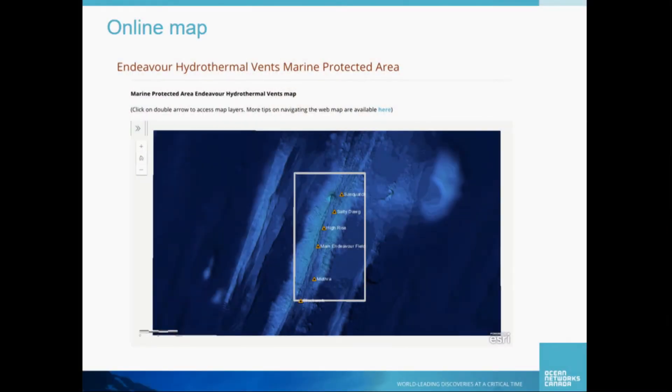We share it with Fisheries and Oceans Canada or whoever wants it, and all this data is free. You can Google 'Endeavour MPA Ocean Networks Canada' and this map will show up for you to access. This is what our online map looks like — just our Ocean Networks website. I've cut out quite a bit of it, but I wanted to show how we embedded the online map into our system. This is showing the vent fields I was talking about earlier with a nice bathymetry layer.